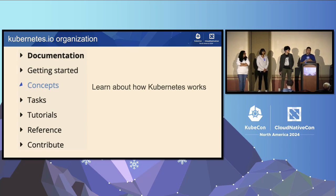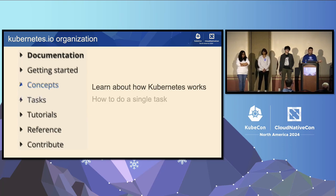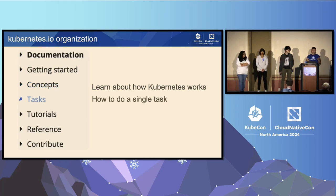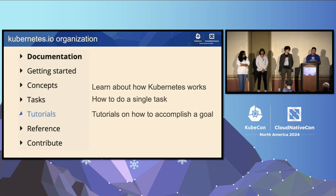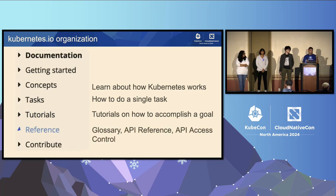The Kubernetes website on kubernetes.io is organized in four main areas. First is concepts — if you want to dive deep into learning how Kubernetes works, worker and control plane nodes and their different components, you'd go to concepts. If you want to do single tasks like how to configure a pod or a config map or secret, you'd go to tasks. For more in-depth tutorials, there's a tutorial section that walks through accomplishing a goal using application container images — like a messaging queue or a simple Guestbook application. Lastly, there's reference, where we keep a glossary and generated reference guides.